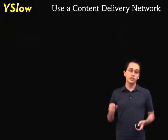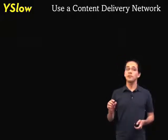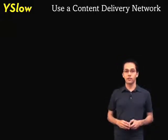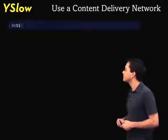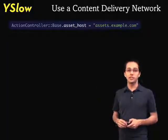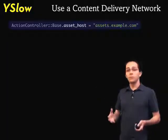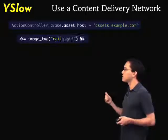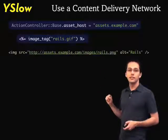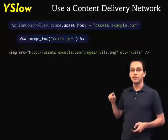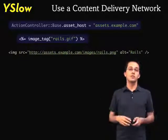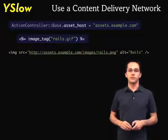Rails actually comes with a little bit of code to help us serve static assets from our content delivery network. We basically declare an asset host in our configuration, and then when we use an image tag, it's going to prepend that URL onto the image path so we can serve our images from our content delivery network.